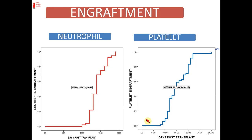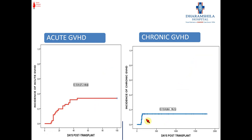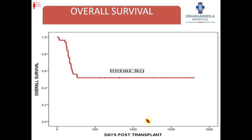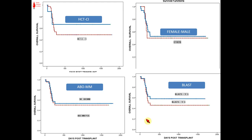I will describe the outcomes of the whole cohort initially, then go to the three sequential studies. The incidence of acute GVHD was 33.9%, and chronic GVHD was 13.9%. The NRM was 11.1%, but relapse — as expected given all patients are refractory — was 45.8%. Overall survival was 51.9%. We looked at HCTCI, female-to-male ratio, blast percentage at transplantation, and ABO mismatch, and these did not have any impact on overall survival.